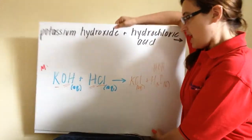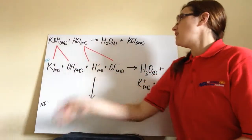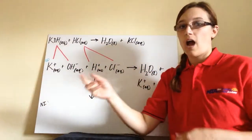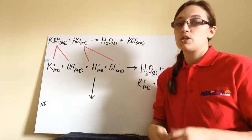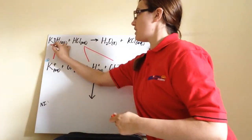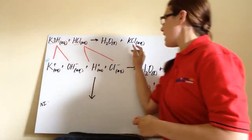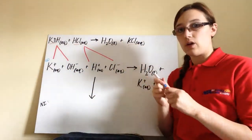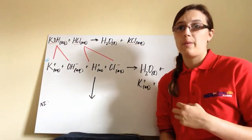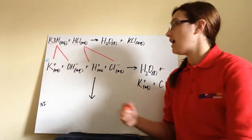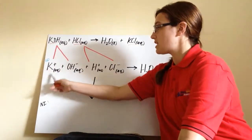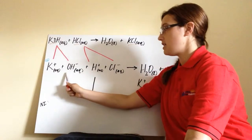So what we're going to do next is we're going to take the molecular equation, and we're going to break it down further. So what we're going to do is take all of the strong electrolytes, so our strong base, our strong acid, as well as our salt, which is the soluble ionic compound, and we're going to break those down into their ions.